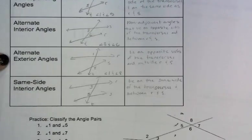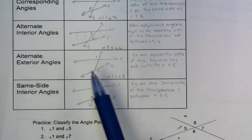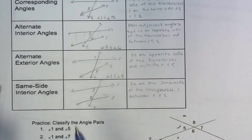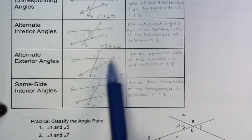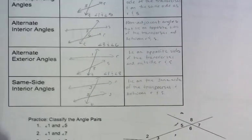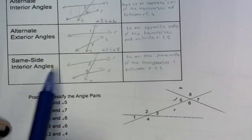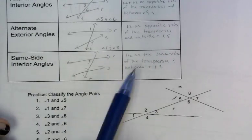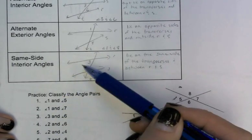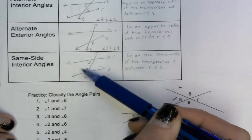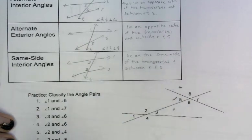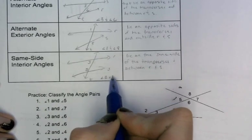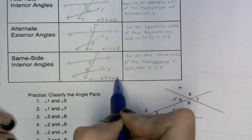Similarly, we have alternate exterior, which is very similar — they're on opposite sides of the transversal, but they're outside or exterior of R and S. Angles 1 and 8 are an example of those. Same side interior: they're on the same side of the transversal and they're in between or interior of the other two lines. Angles 3 and 5 are an example of same side interior.